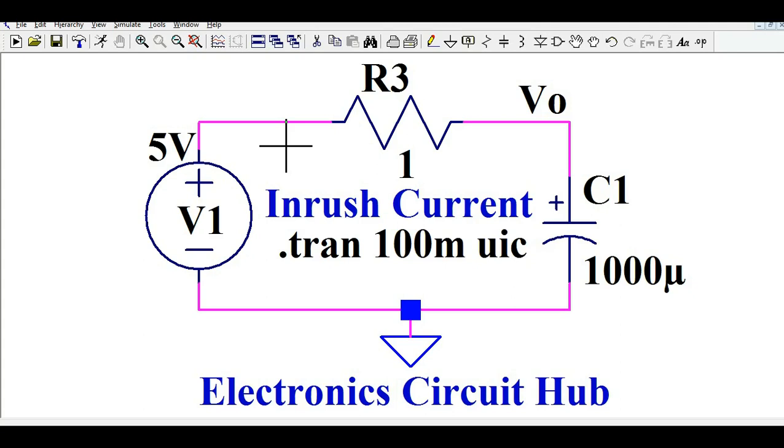You can see this is a very simple RC circuit. The value of R3 is 1 ohm, C1 is 1000 microfarad, and the supply voltage is 5 volts. Let us understand how to measure the inrush current in LTSpice for this particular RC circuit.